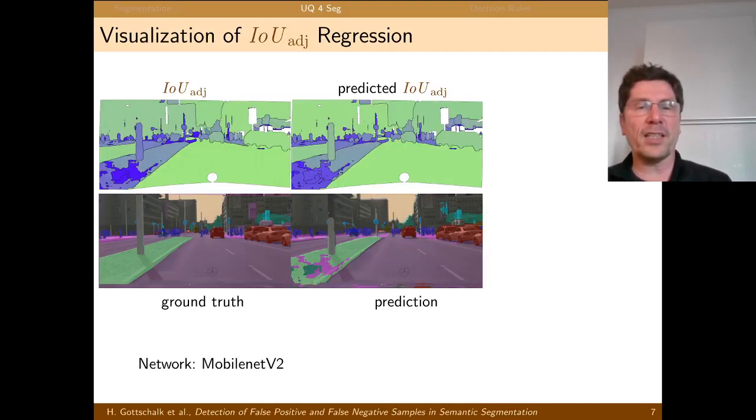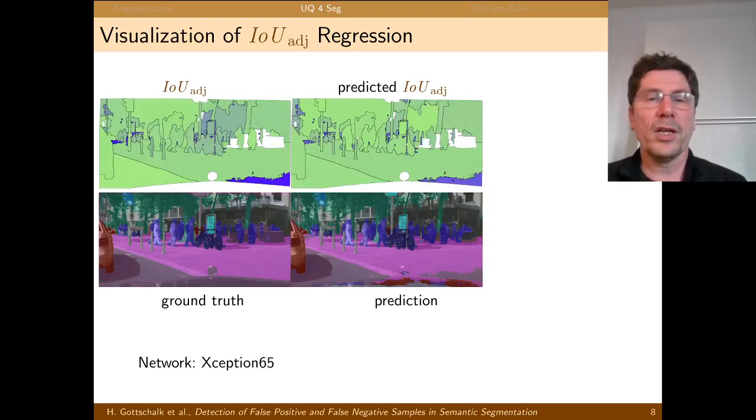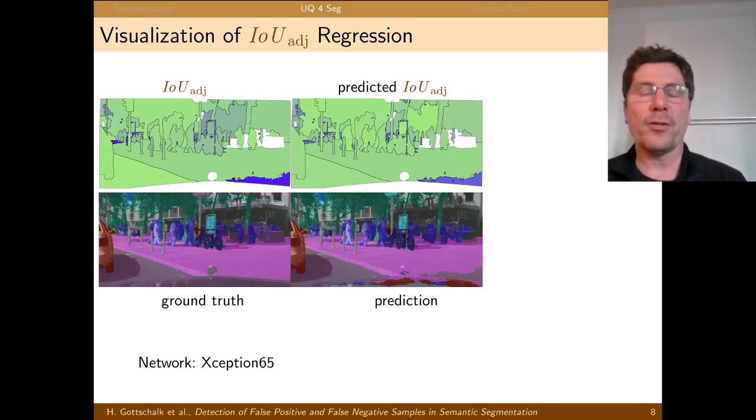And visualizing that you have here four panels. The left lower panel gives the ground truth, whereas the right lower panel gives the neural networks prediction. So this here gives the actual quality and this here gives our predicted quality. And here you see that this is pretty close. The same for the stronger network. Essentially the same kind of information.